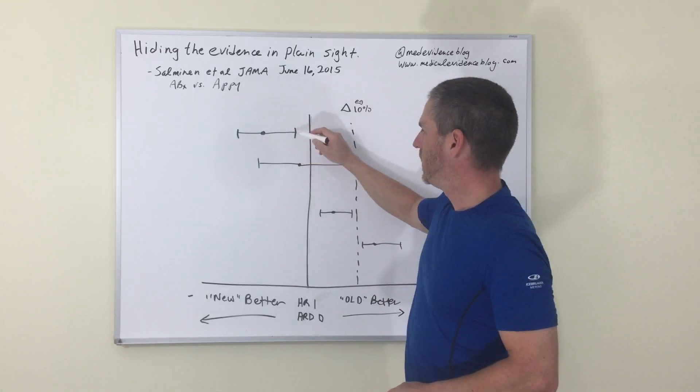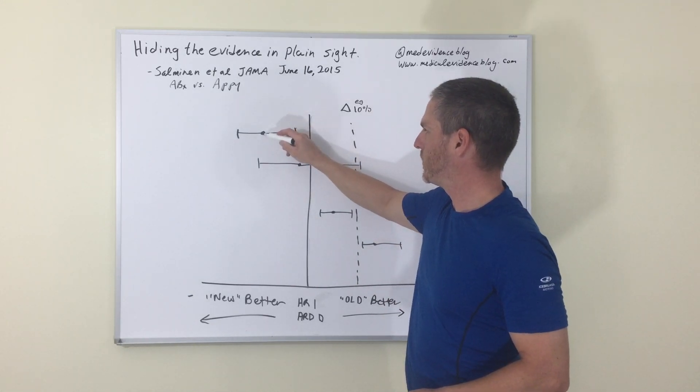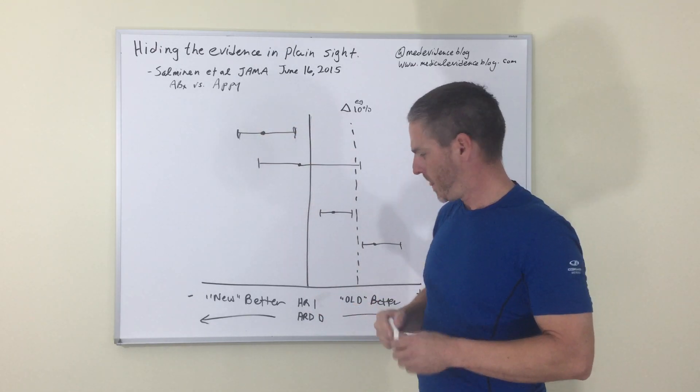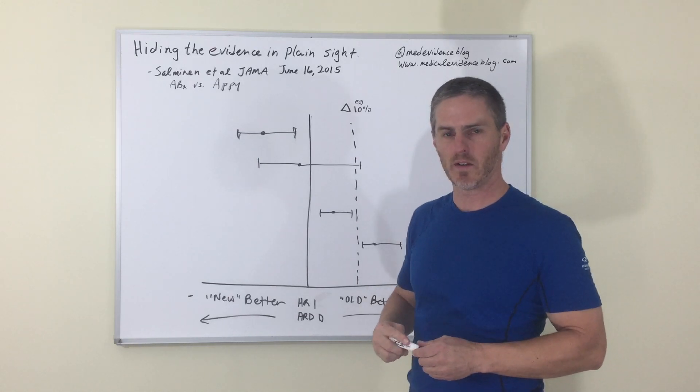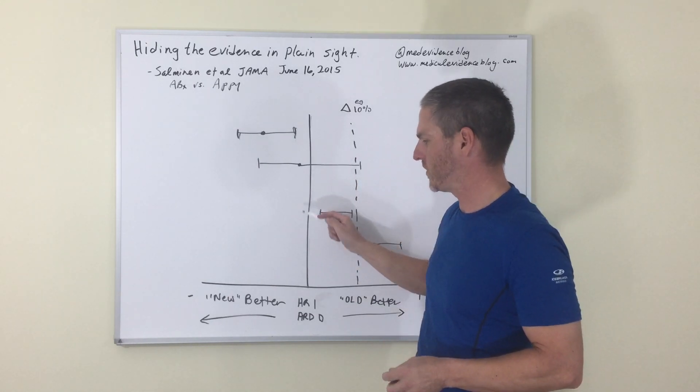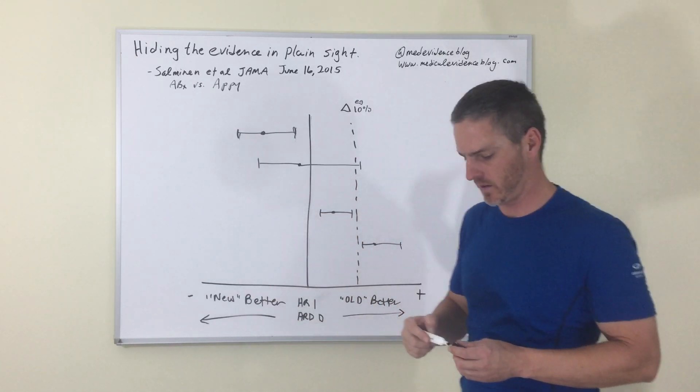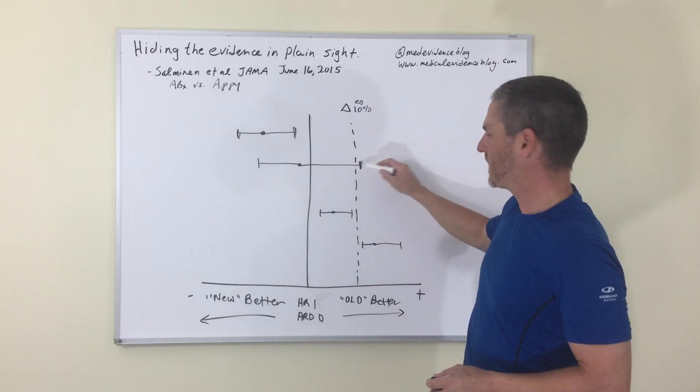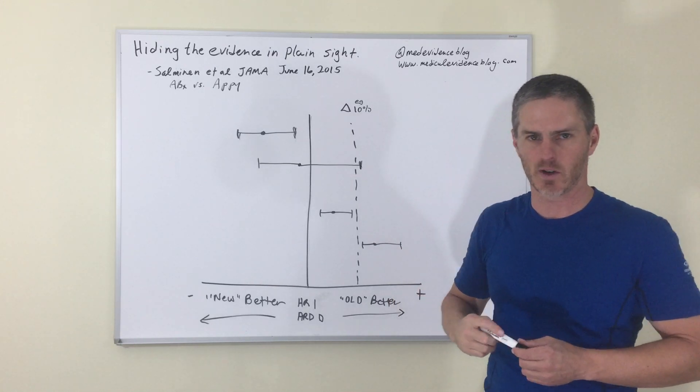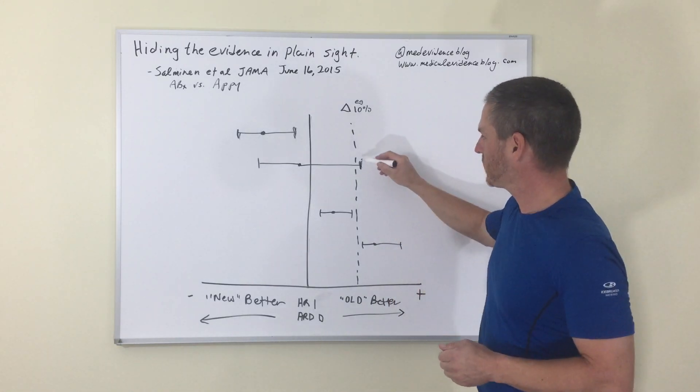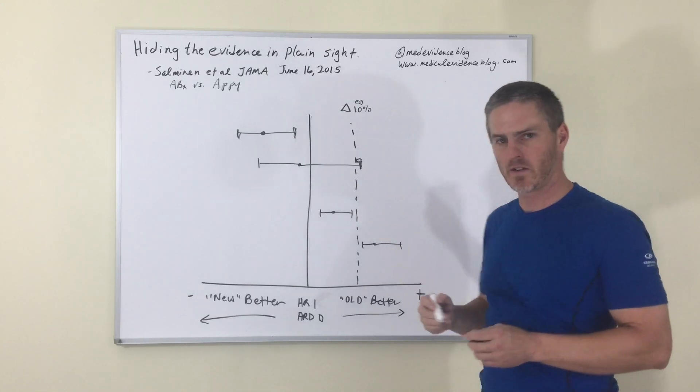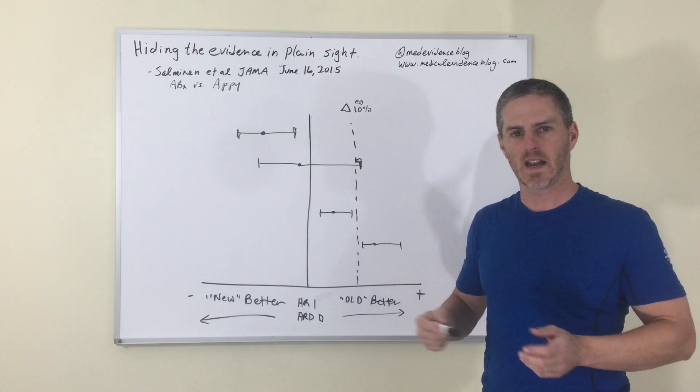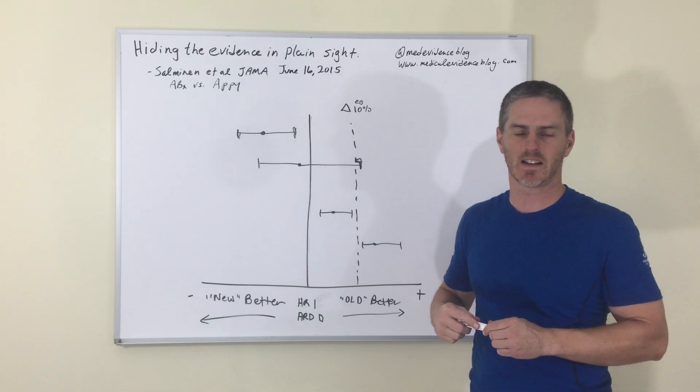So if your confidence interval, if your point estimate falls here and your entire confidence interval excludes an absolute risk difference of one, for example, you have a statistically significant result in favor of the new therapy, and you can declare non-inferiority. However, if your upper 95% confidence interval extends past the pre-specified margin for non-inferiority, you have not excluded the possibility of these differences here greater than the delta value, and so you can't declare non-inferiority, you have an inconclusive study.